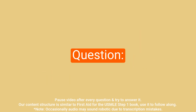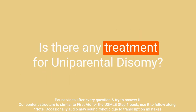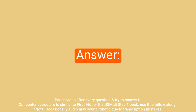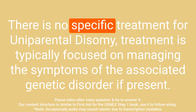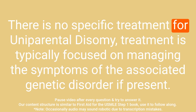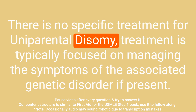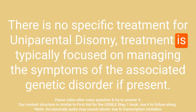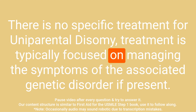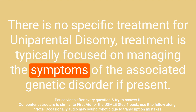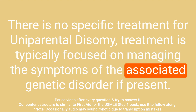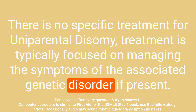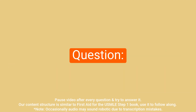Question: Is there any treatment for uniparental disomy? Answer: There is no specific treatment for uniparental disomy. Treatment is typically focused on managing the symptoms of the associated genetic disorder, if present.